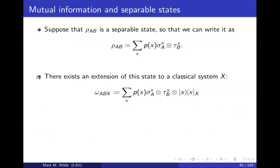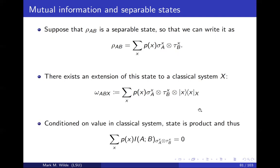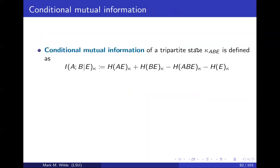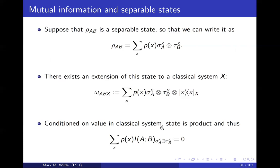To see this, let's consider a separable state. Suppose that rho_AB is separable. Then you can write it as a convex combination of product states. You can find an extension of this state by creating an extension system X and putting these classical labels there, where ket X is part of an orthonormal basis. If you trace over system X, you get back to the original state. Conditioned on the value X in the classical system, the state of A and B is a product state — so conditioned on knowing X, the conditional mutual information will be equal to zero. That happens for a separable state, which suggests we can make use of this in defining an entanglement measure.